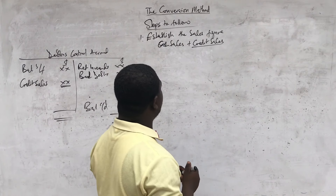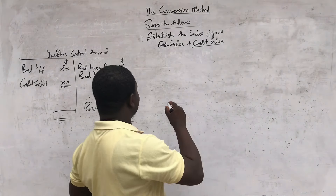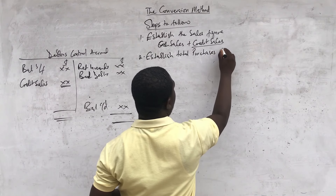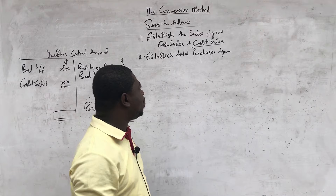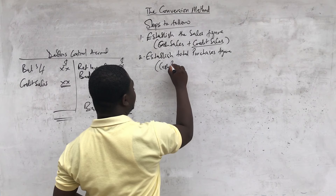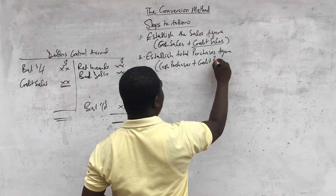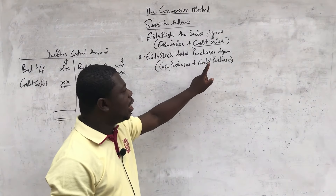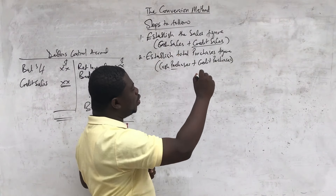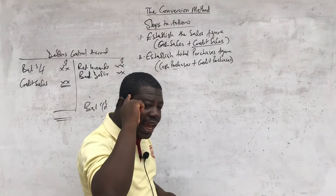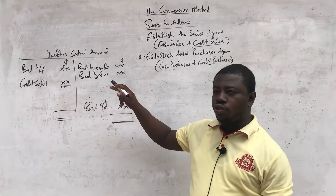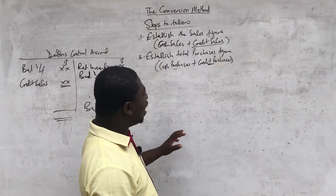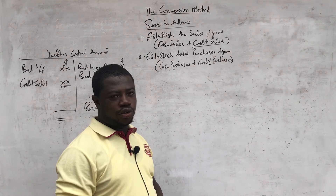The next step after establishing your total sales figure is to establish your total purchases figure, because we need both sales and purchases for the income statement. Just like the first step, the total purchases figure is your cash purchases plus any credit purchases. Cash purchases is always given to you in the question or may not even be there at all, but the main challenge is with the credit purchases. Just like we prepared a debtors control account to find credit sales, you need to also prepare a creditors control account or purchases ledger control account to find your credit purchases.